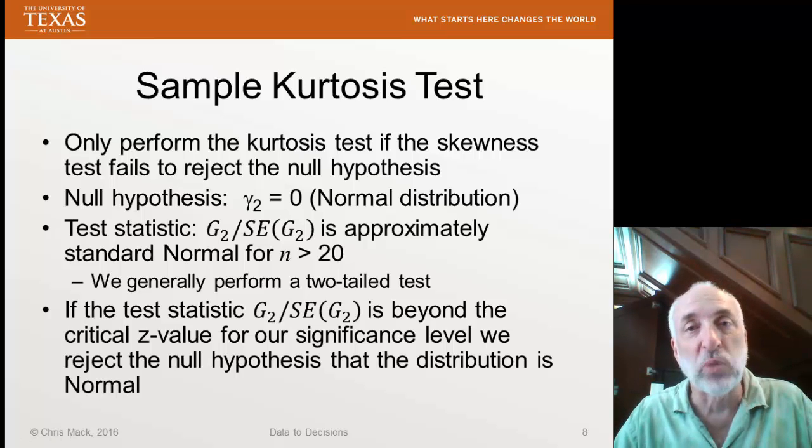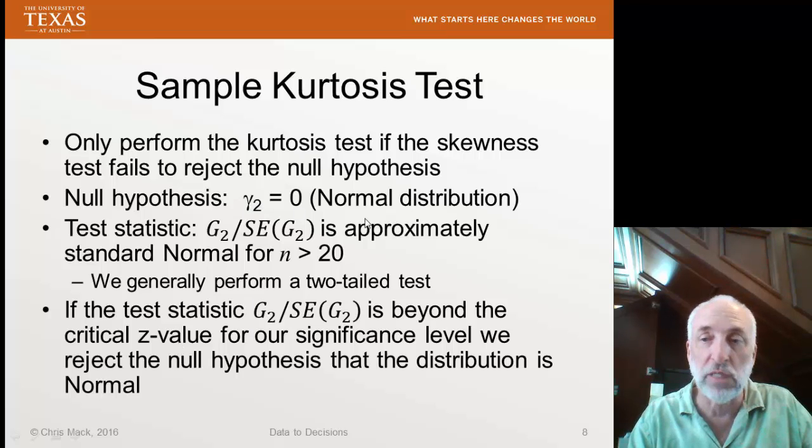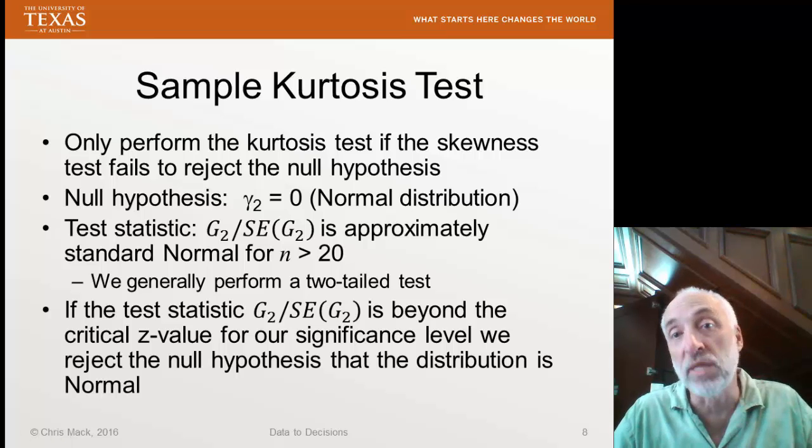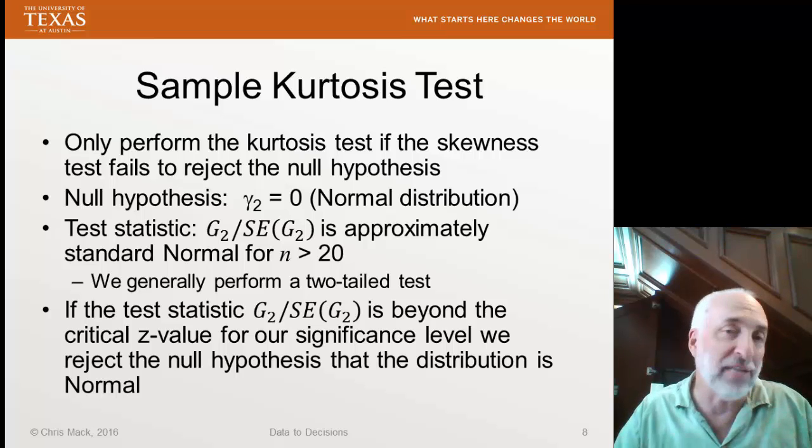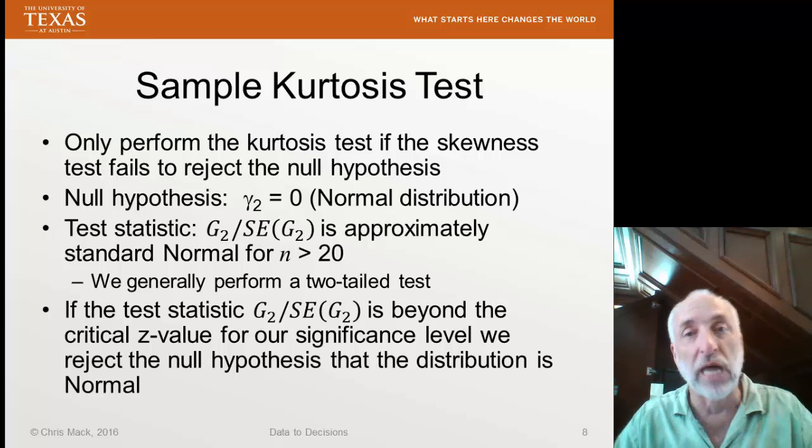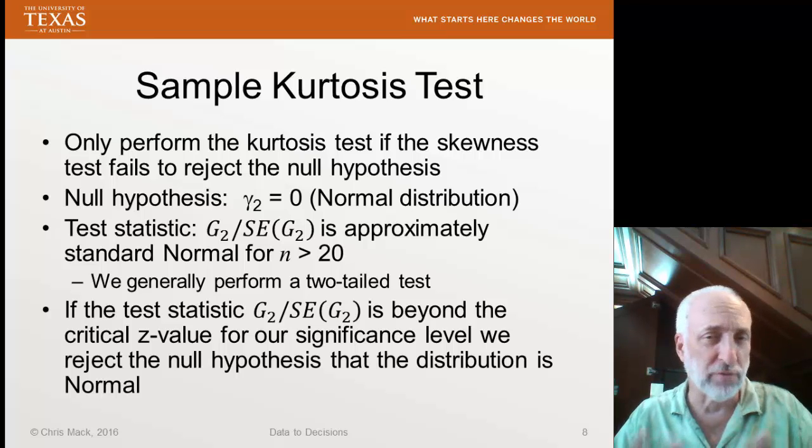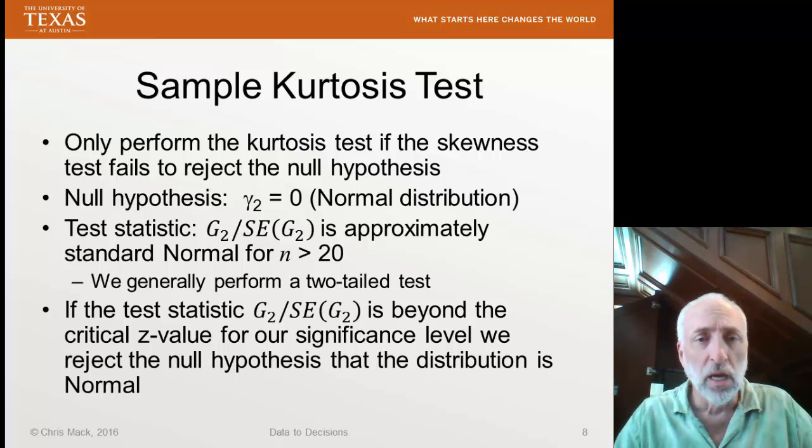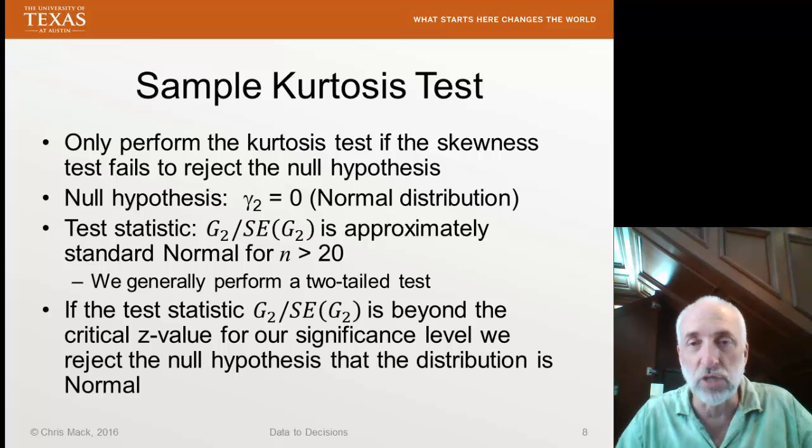So we can use this sample estimate of the excess kurtosis to test our distribution for normality. And we'd expect this excess kurtosis to be 0. So our null hypothesis is that gamma 2 equals 0. That is, we really do have a normal distribution. Now we're only going to perform this kurtosis test if the skewness test fails. So if we find in the skewness test that the distribution is skewed, it's not symmetric, well then there's no need to do a kurtosis test. We know it's not normal, we're done. But if the skewness test fails to reject the null hypothesis that the distribution is symmetric, then we can perform the kurtosis test.